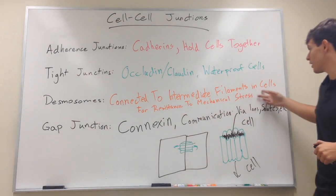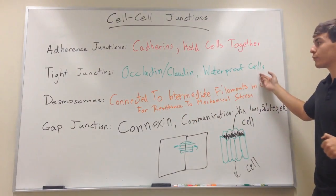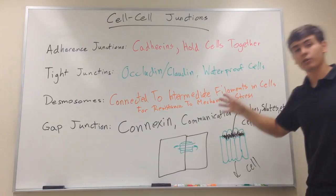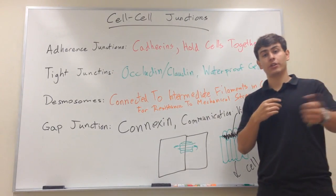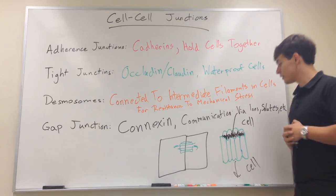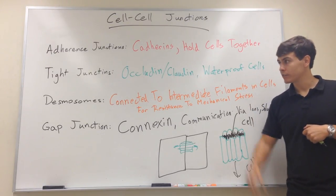Desmosomes help with strength of mechanical forces. Tight junctions are good for waterproofing cells or just solute proofing. And adherence junctions are good for holding cells together in general. And those are the basic cell to cell junctions that you should be concerned about. Good luck!